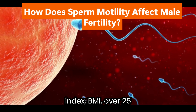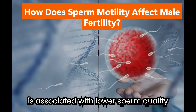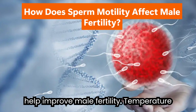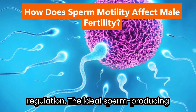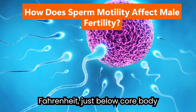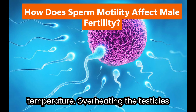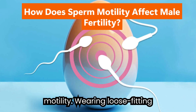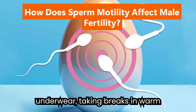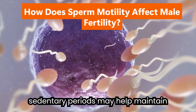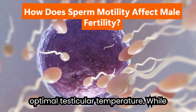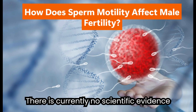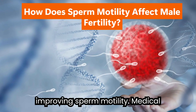Maintain a healthy weight: a BMI over 25 is associated with lower sperm quality and quantity, and weight loss through a balanced diet and regular exercise may help improve male fertility. Temperature regulation: the ideal sperm-producing temperature is approximately 94 degrees Fahrenheit, just below core body temperature. Overheating the testicles due to tight clothing, prolonged sitting, or hot environments can reduce sperm motility; wearing loose-fitting underwear and avoiding extended sedentary periods may help maintain optimal testicular temperature. There is currently no scientific evidence to support complementary or alternative therapies for improving sperm motility.